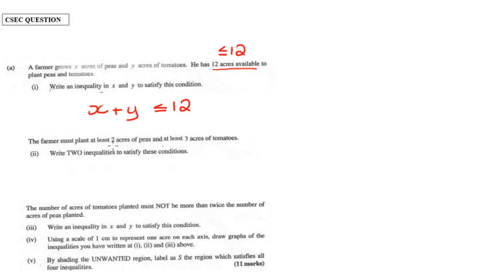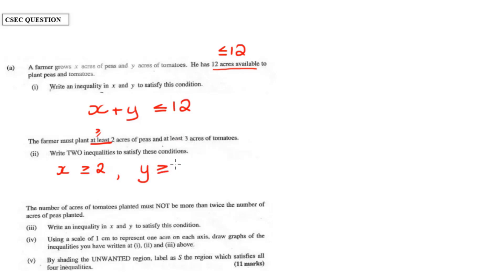Next, it says the farmer must plant at least two acres of peas and at least three acres of tomatoes — write two inequalities to satisfy these conditions. The phrase 'at least' tells us greater than or equal to. So the peas, which is x, would have to be greater than or equal to two. Likewise, at least three acres of tomatoes means that y is going to be greater than or equal to three.